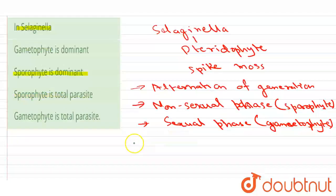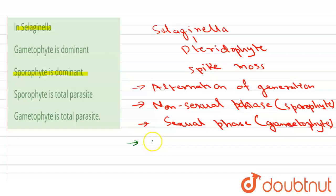In Selaginella, there are two phases — gametophyte and sporophyte — out of which one is dominant and another is not. Selaginella is a sporophyte plant and produces two different types of spores: microspores and megaspores.